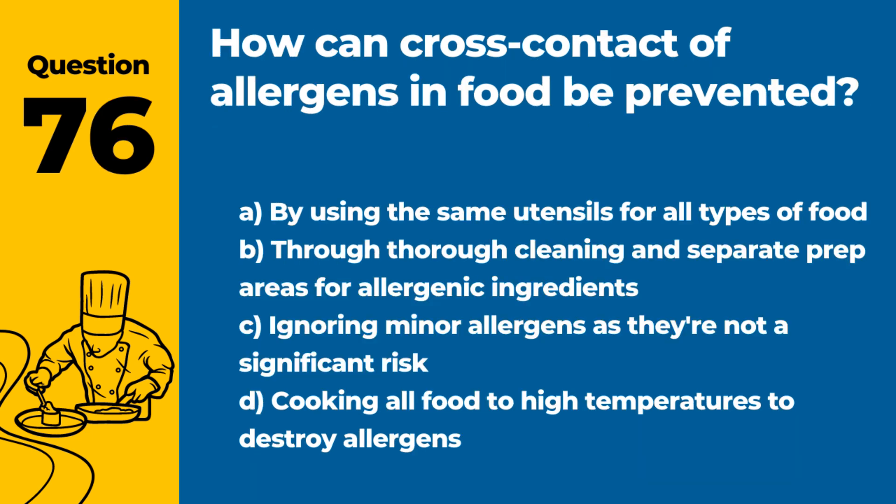Question 76. How can cross-contact of allergens in food be prevented? Answer: B. Through thorough cleaning and separate prep areas for allergenic ingredients. Preventing cross-contact is essential for the safety of customers with food allergies.